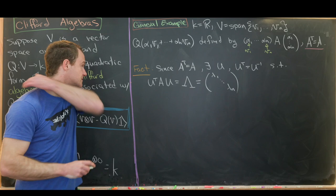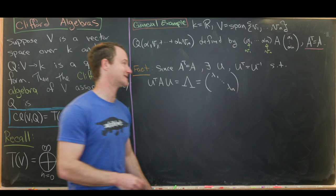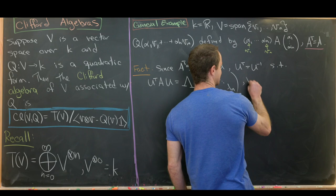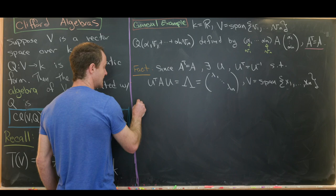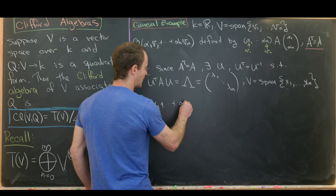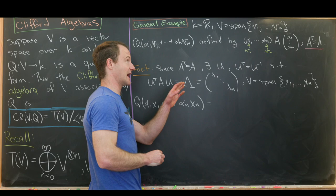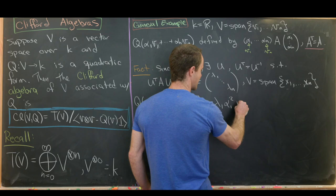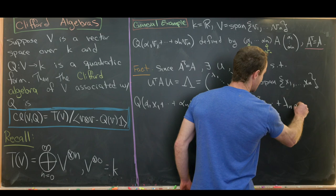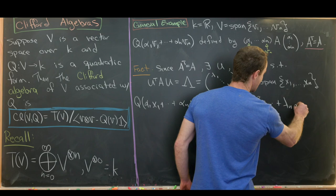Let's take a new basis for this vector space with respect to this diagonalization, calling it x₁ to xₙ. So V equals span of x₁ up to xₙ. In this diagonalized basis, Q(α₁x₁ + ... + αₙxₙ) equals λ₁α₁² + λ₂α₂² + ... + λₙαₙ². In particular, Q(xᵢ) equals λᵢ.